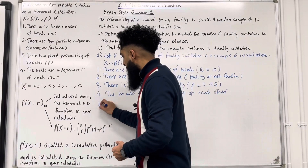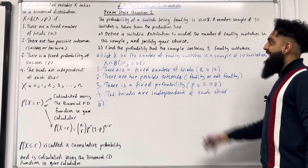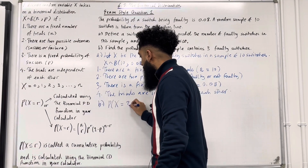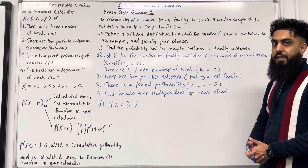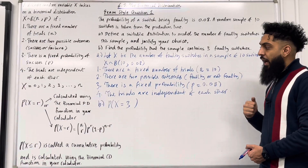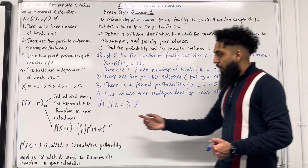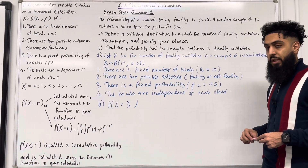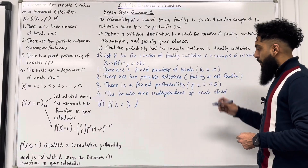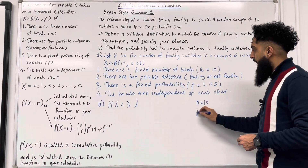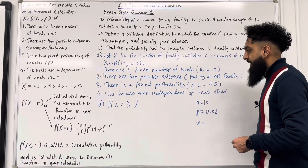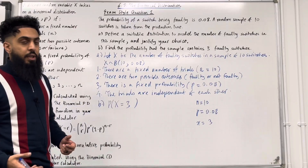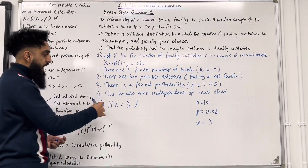Let's have a look at part B. We want to find the probability that the sample contains three faulty switches, so the probability we're calculating is P(X = 3) — exactly three faulty switches. We can calculate this in two possible ways: either use the binomial PD function in our Casio calculator or apply the formula. The most efficient method is to use the binomial PD function, with N equal to 10, P equal to 0.08, and lowercase x equal to 3.